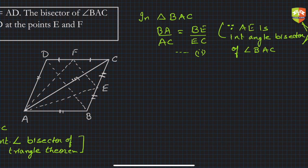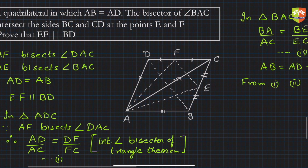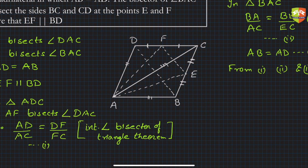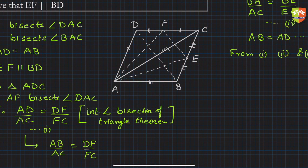Also, it is given that AB is equal to AD. Let this be equation (3). From equations (1) and (3), we can replace AD with AB, so AD/AC becomes AB/AC, which equals DF/FC. Let this be equation (4).